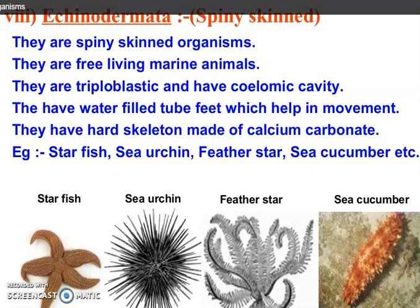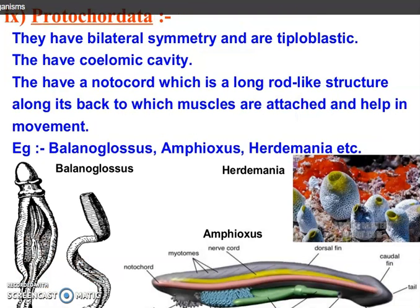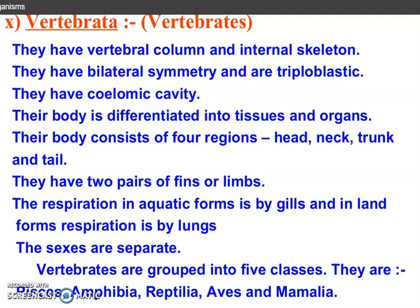Now come to vertebrates — animals with a vertebral column. All the animals belonging to this group have a distinct backbone. In this phylum, we are going to discuss about many classes: Pisces, Amphibia, Reptilia, Aves, and Mammalia. Vertebrata have a vertebral column and internal skeleton. They have bilateral symmetry and are triploblastic. Their body is divided into four regions: head, neck, trunk, and tail. They have two pairs of fins or limbs and their sexes are separate.